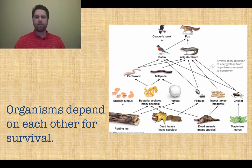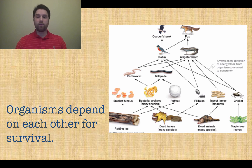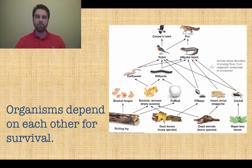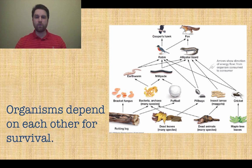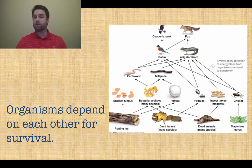Here's another picture of a food web. What you have to know is that organisms depend on each other for survival. So if you take something out of that food web, everything shifts in a meaningful way. Think about what would happen if you removed one or more of these organisms — which organisms would thrive, and which ones would suffer?